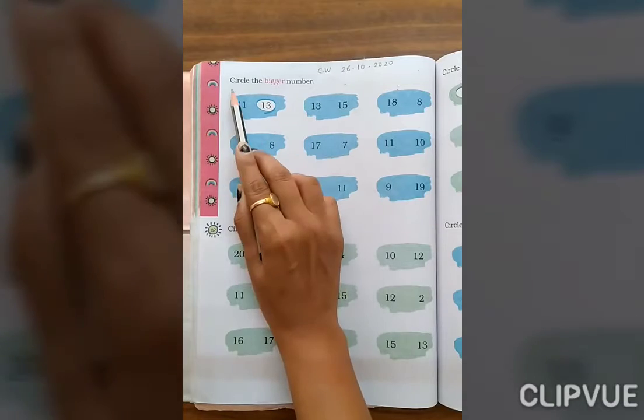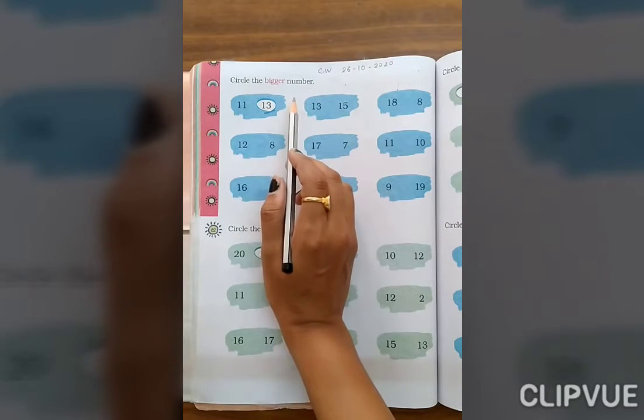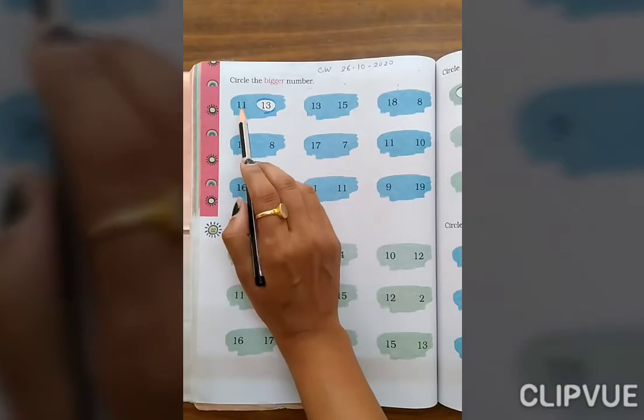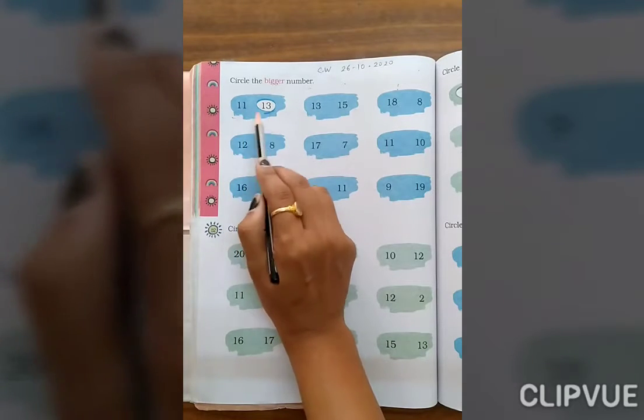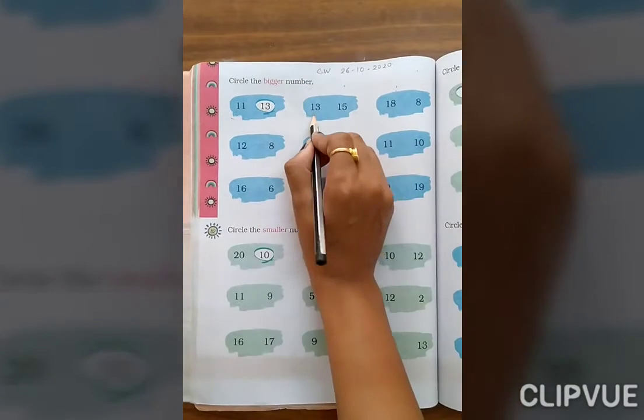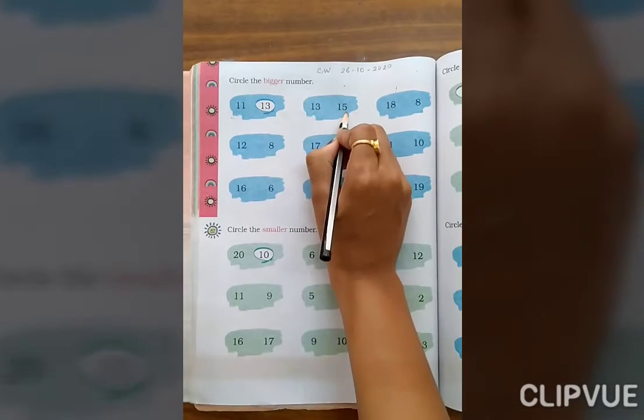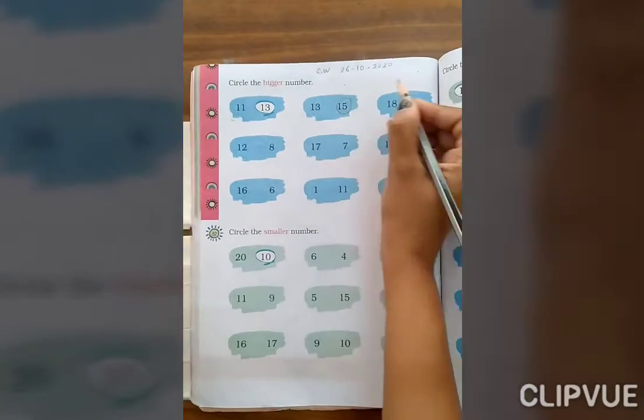Circle the bigger number. जो बड़ा नंबर है, उसके उपर आपको circle करना है. Look at here, example: 11 and 13. इन दोनों में से बड़ा कौन है? 13. Then circle. Now 13 and 15, so which one is bigger? 15. Then you can circle it.